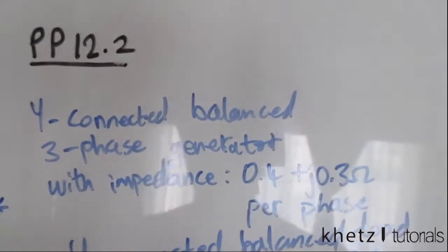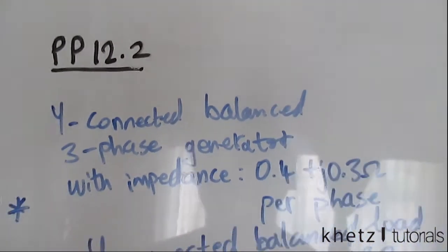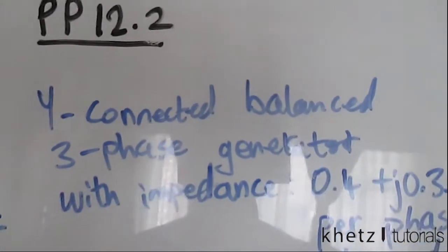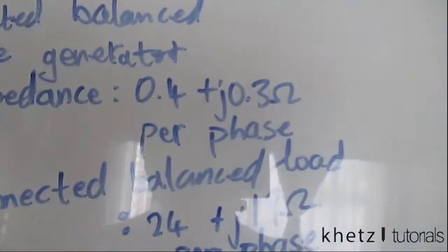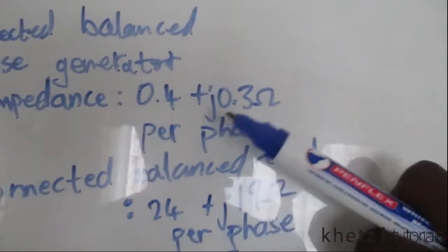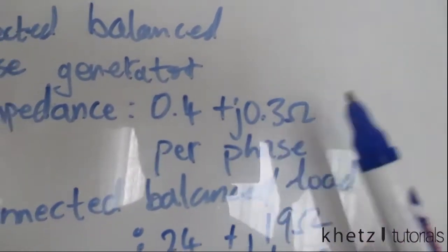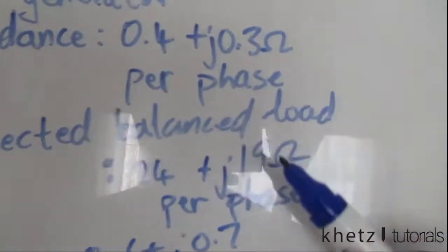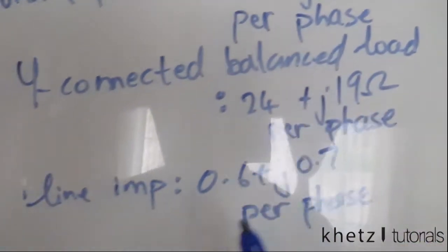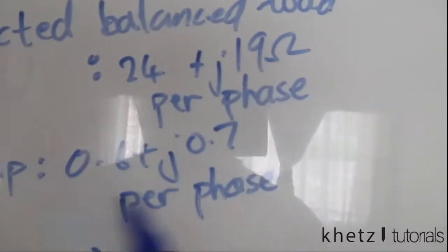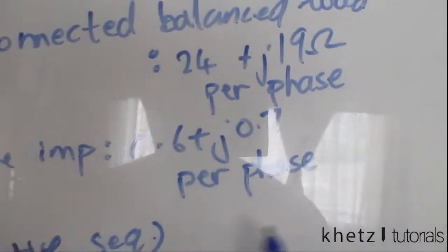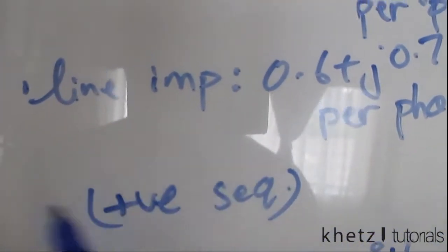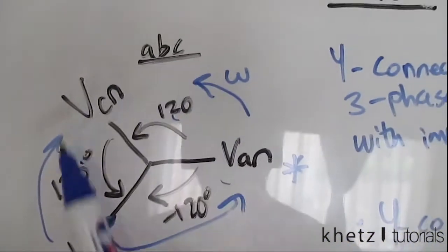Welcome to Cat's Tutorials. In this video I'll be doing practice problem 12.2. We're given a Y-connected three-phase generator with an impedance of 0.4 plus j per phase, connected to a Y-connected balanced load of a given impedance, and we also have a line impedance per phase. This is a positive sequence system.